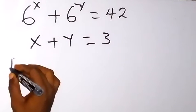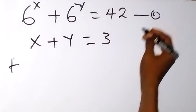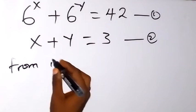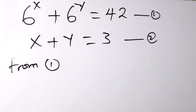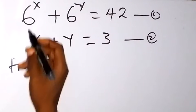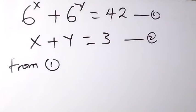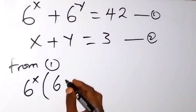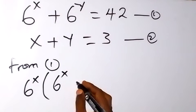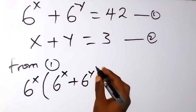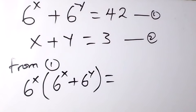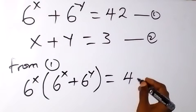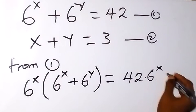Let's label the first equation as equation 1 and the second as equation 2. From equation 1, let's rewrite it and multiply both sides by 6 raised to the power x. So we multiply the left-hand side, that is 6 raised to the power x plus 6 raised to the power y, and also the right-hand side, which becomes 42 multiplied by 6 raised to the power x.